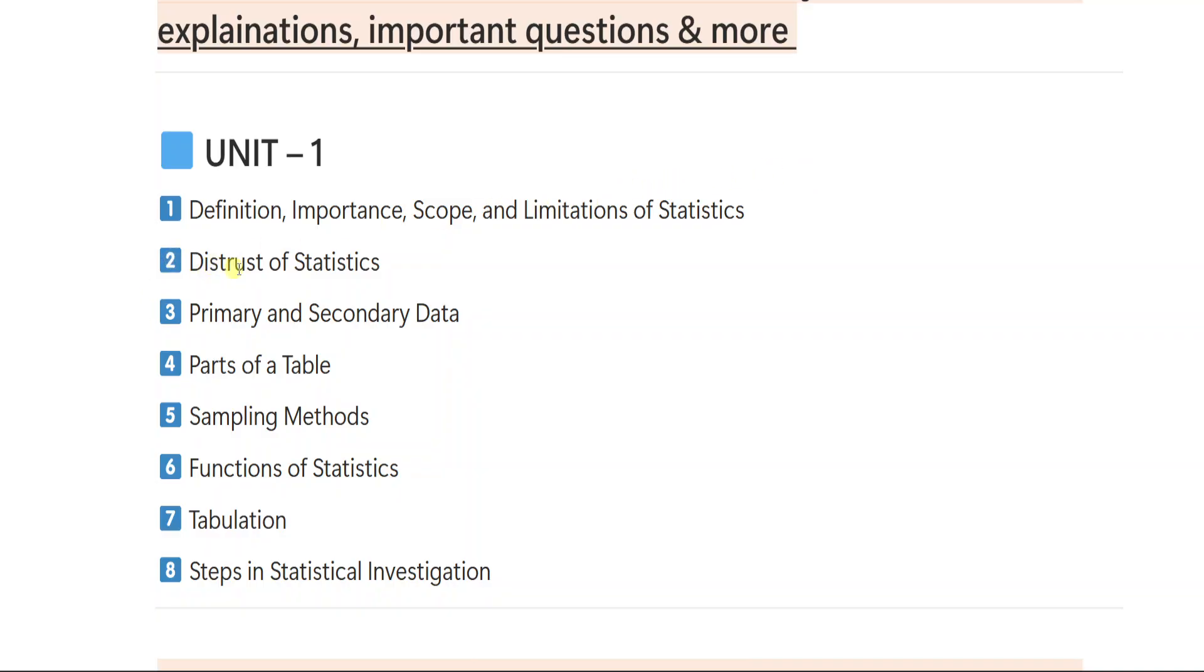Second one is distrust of statistics, third primary and secondary data, four parts of a table, five sampling method, six functions of statistics, seven tabulation, eight steps in statistical investigation.